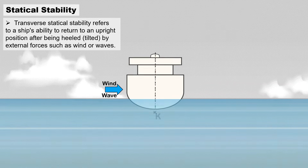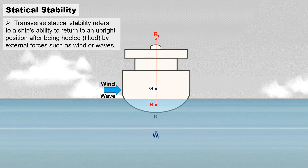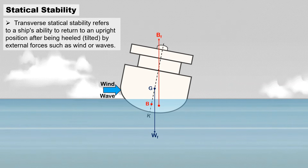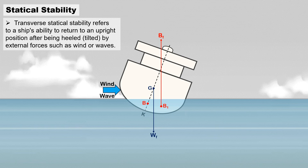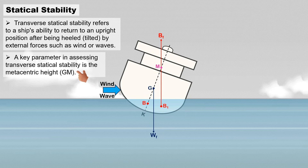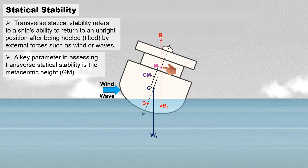This form of stability focuses on the ship's initial response to heeling, and is primarily concerned with the relationship between the center of gravity and the center of buoyancy. A key parameter in assessing transverse statical stability is the metacentric height, GM, which is the distance between the center of gravity, G, and the metacenter, M.